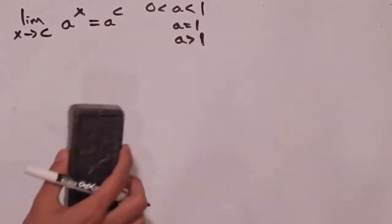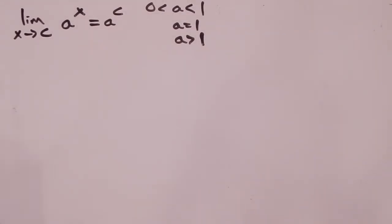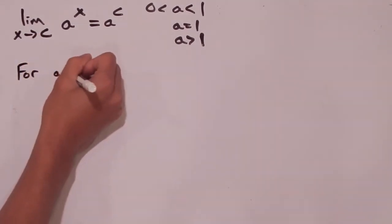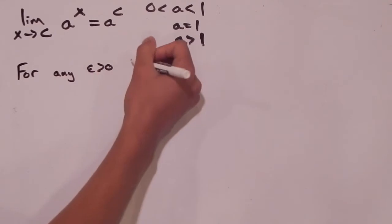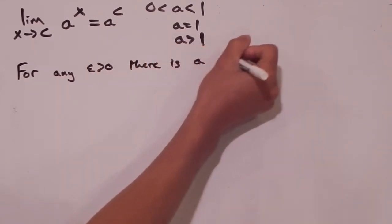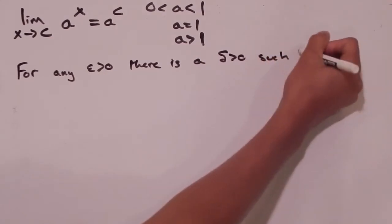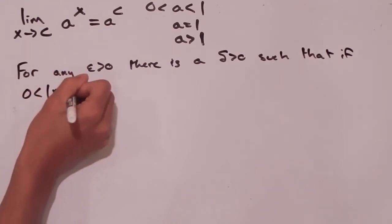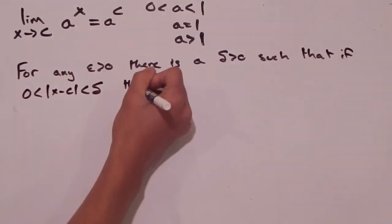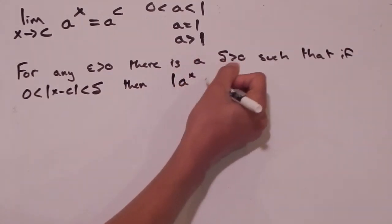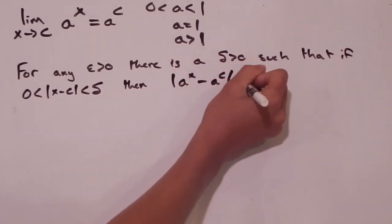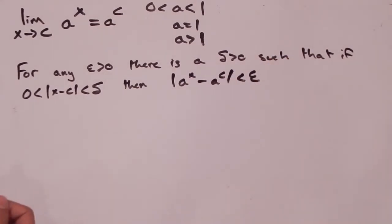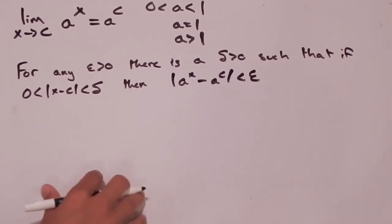Now we'll look at the next case, which is sadly not going to be that easy — a greater than 1. To prove this, we have to show that for any epsilon greater than 0, there is a delta greater than 0, such that if 0 is less than the absolute value of x minus c, less than delta, then the absolute value of a to the x minus a to the c is less than epsilon. This is our epsilon-delta proof, and it's a little different than ones we've done in the past.